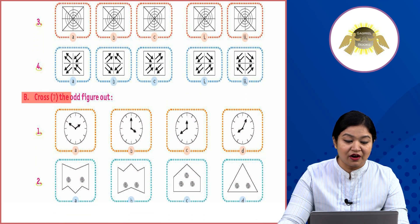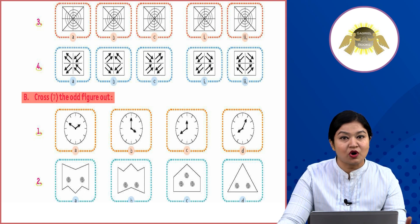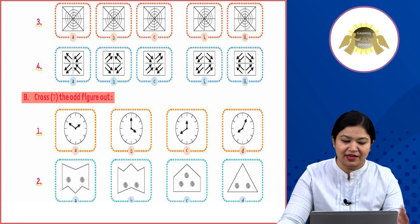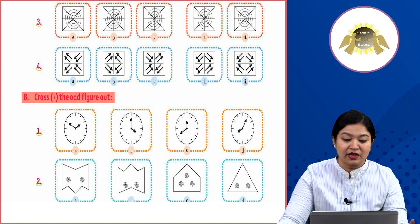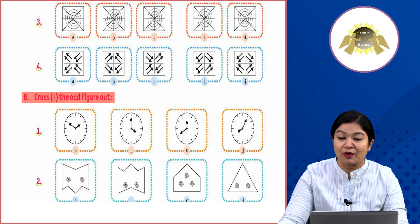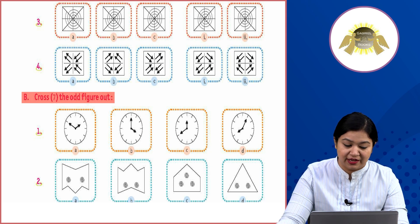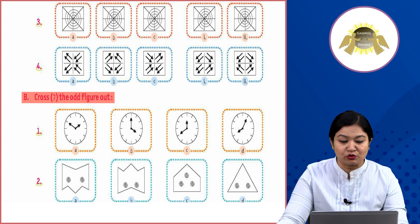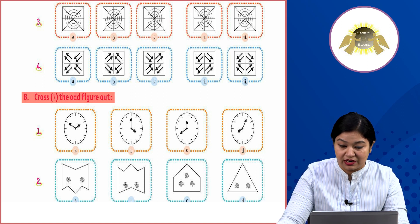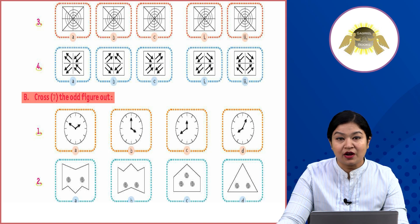Cross the odd figure out. The odd figure — circle. In the first group, you have seen A, B, C, D — four watches. In the first place it is 2, in the second place it is 4, in the third place it is 12, and in the fourth place it is 8.